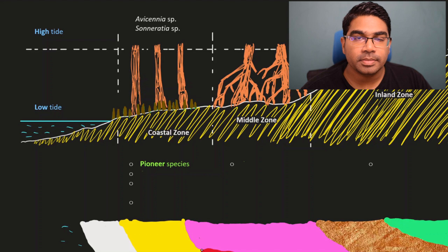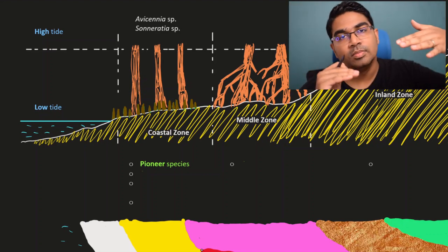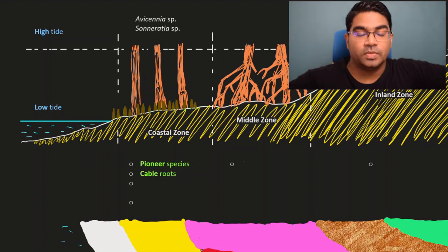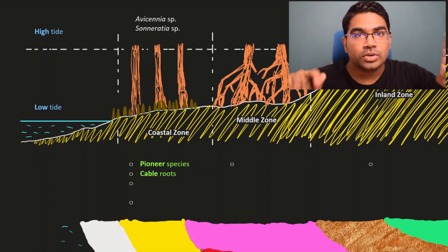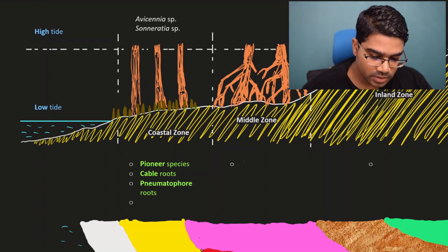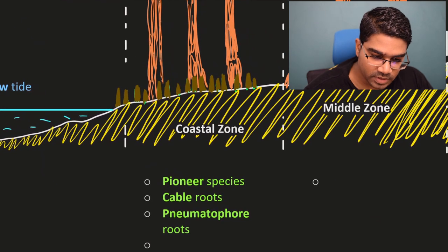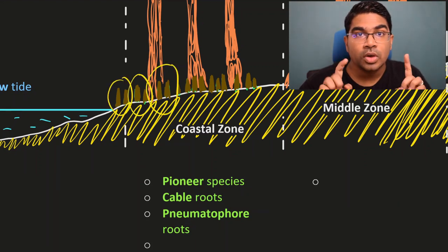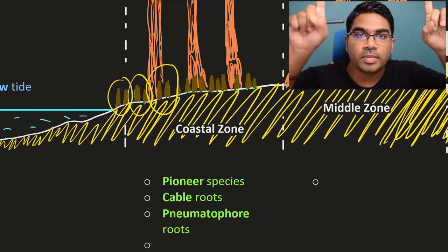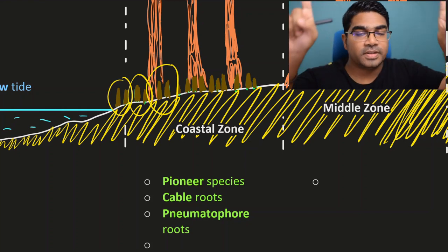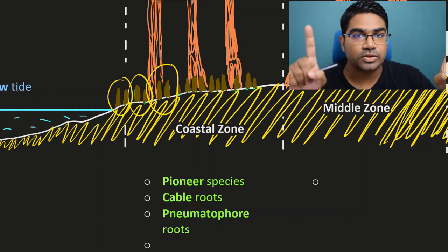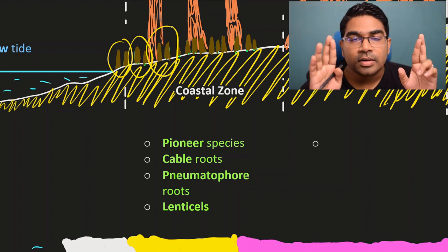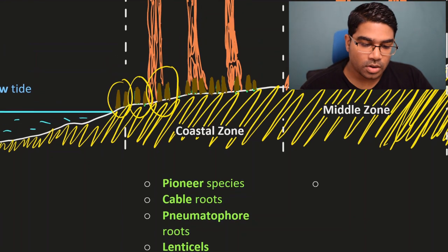Avicennia and Sonneratia have special adaptations that enable them to live in the coastal zone, where most of the time the roots are submerged in water. They develop special roots known as cable roots, which run underground. These cable roots have vertical projections known as pneumatophore roots. These pneumatophores grow upwards above the ground, enabling gaseous exchange through structures called lenticels on the pneumatophores.